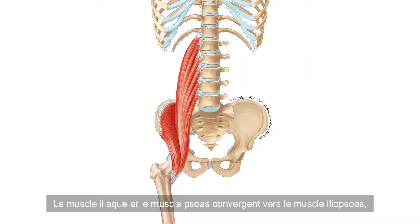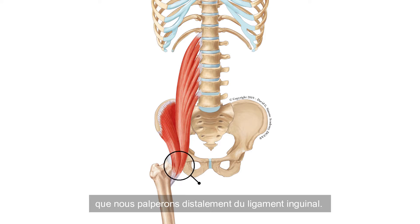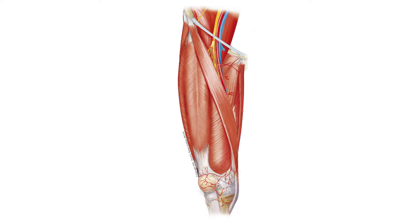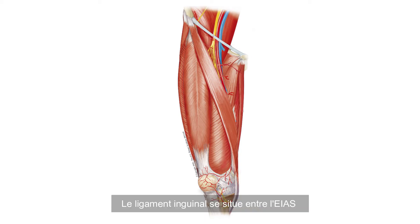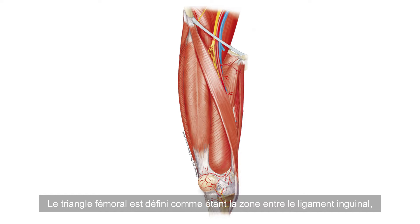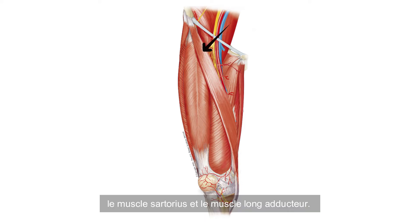The iliacus muscle and the psoas muscle converge to the iliopsoas muscle, which you will palpate distally of the inguinal ligament. The iliopsoas lies within the femoral triangle, just medial of the sartorius muscle. The inguinal ligament can be localized between the ASIS and the symphysis. The femoral triangle is defined as the area between the inguinal ligament, the sartorius muscle, and the adductor longus muscle.